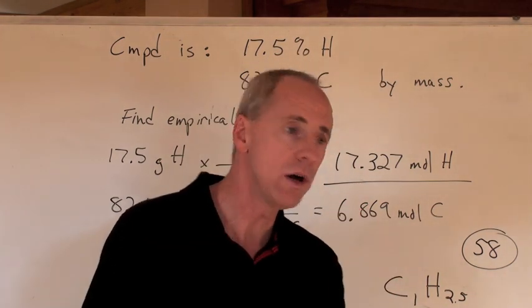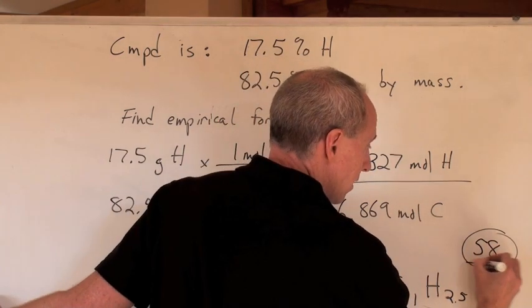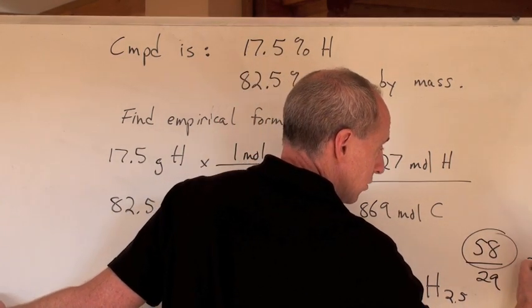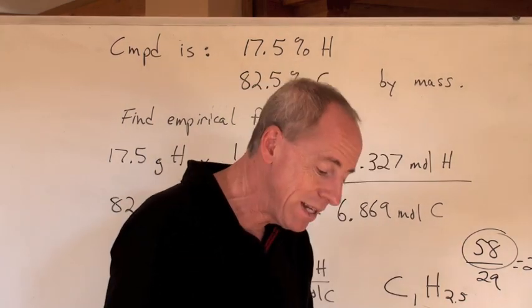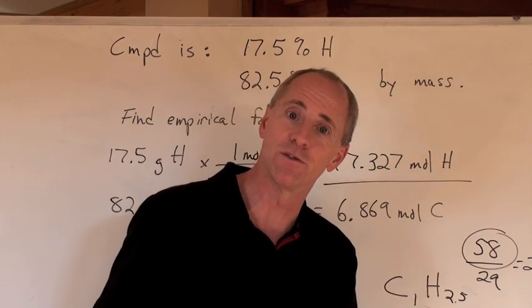But somebody says, no, no, no, the molar mass, the true molar mass is 58. Well, 58 divided by 29 is 2, isn't it? Which means, then, that you have to double this formula to get the molecular formula. Does that make sense?